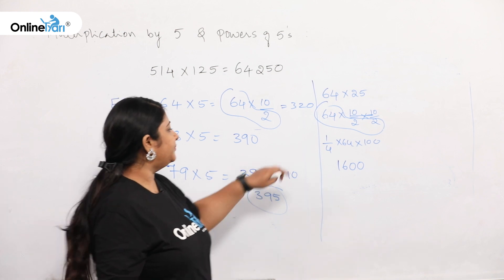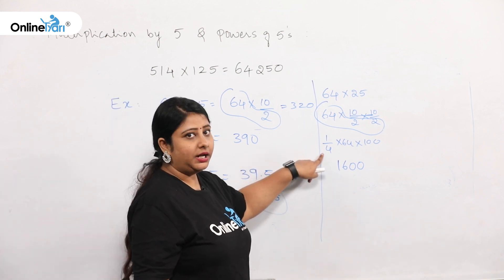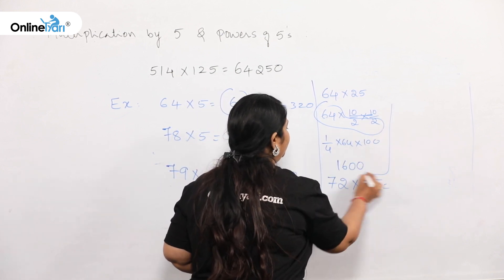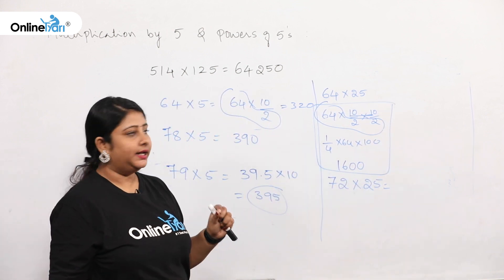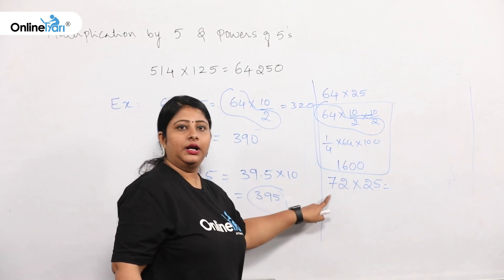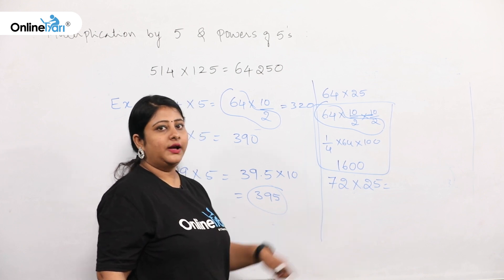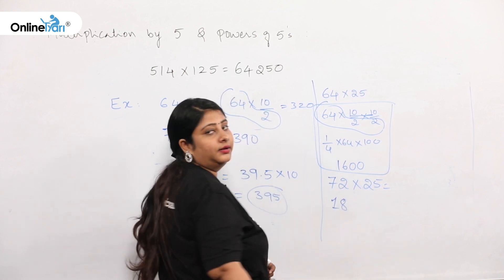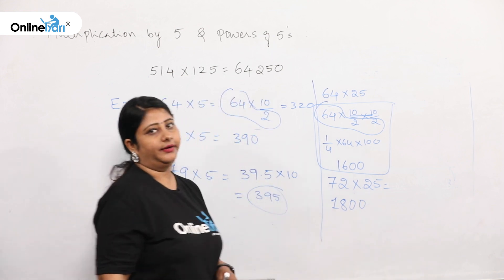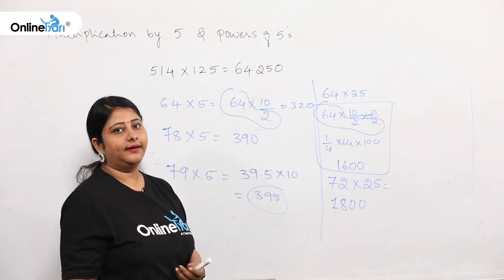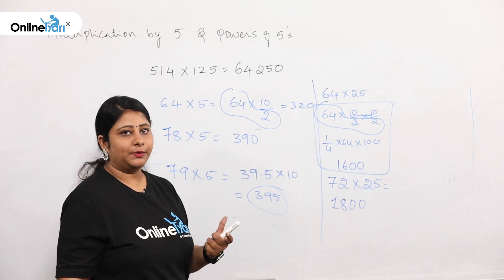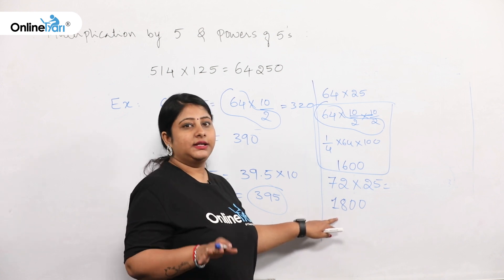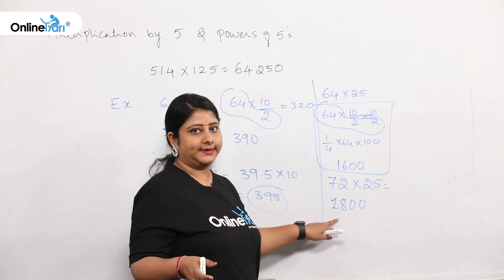When there is a 25, divide the number by 4 and multiply by 100. Take 72 × 25: one fourth of 72 is 18, and 18 × 100 = 1800. So 72 × 25 = 1800. If you know the multiplication tables properly you can directly write the answer, which saves even more time. That's why it is suggested to remember tables at least up to 30.